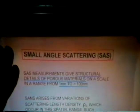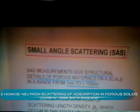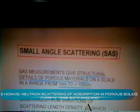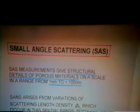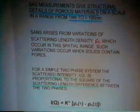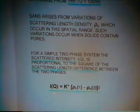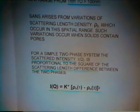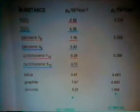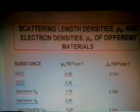As you've already heard from Dr. Elberger-Doll in her talk, small angle scattering gives you details of structure in the range of one to about 100 nanometres. It arises from variations of scattering length density in the system, and the intensity is dependent on the square of the difference between the scattering length densities of the two phases in the system. I've indicated some scattering densities for different materials — these would be adsorbates, and these are typical porous materials.